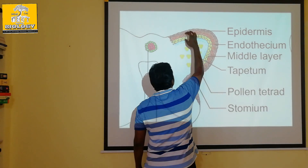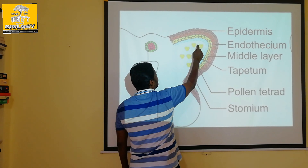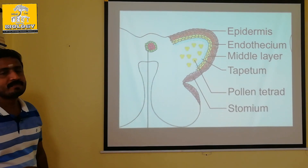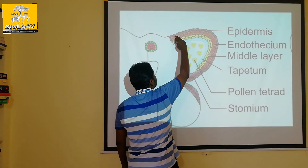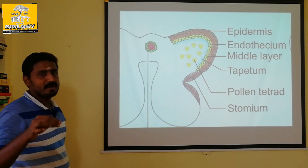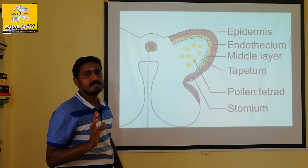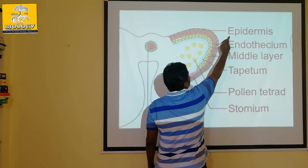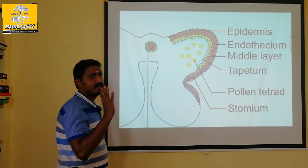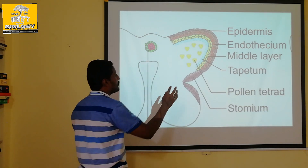We will talk about the wall layers. The wall layers consist of: epidermis, endothecium, middle layer, and tapetum. How are these wall layers formed? We will discuss that in this video.